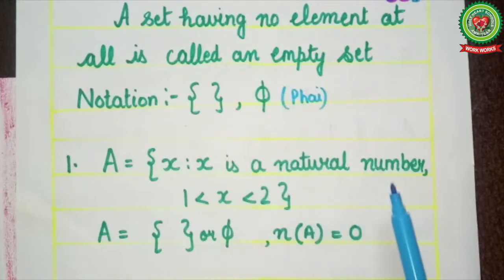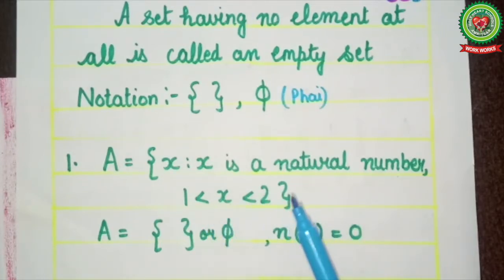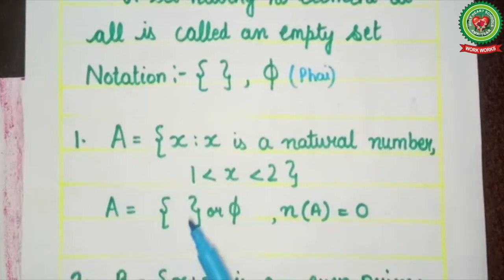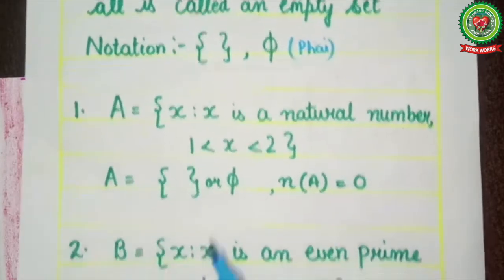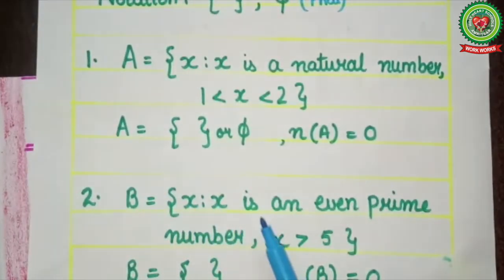Here, set A = {x | x is a natural number, x > 1 but x < 2}. Can you tell me any natural number which is greater than 1 and less than 2? No, there is no such element. So we write here {} or φ, and its cardinal number is 0.